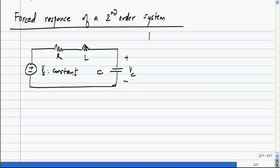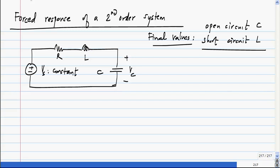To find the final values, you open circuit the capacitors and short circuit the inductors. This you would have to do anyway for RL circuits as well, but for RLC circuits it is the same way.